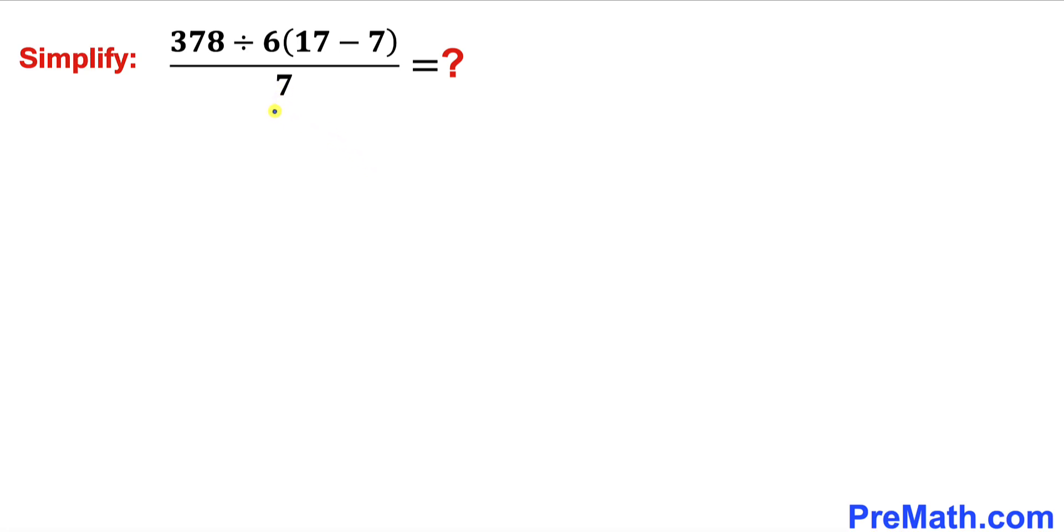Welcome to PreMath. In this video, I'm going to show you how to simplify this given rational expression the right way. Here's our problem: 378 divided by 6, times, inside the parentheses, 17 minus 7, all over 7.